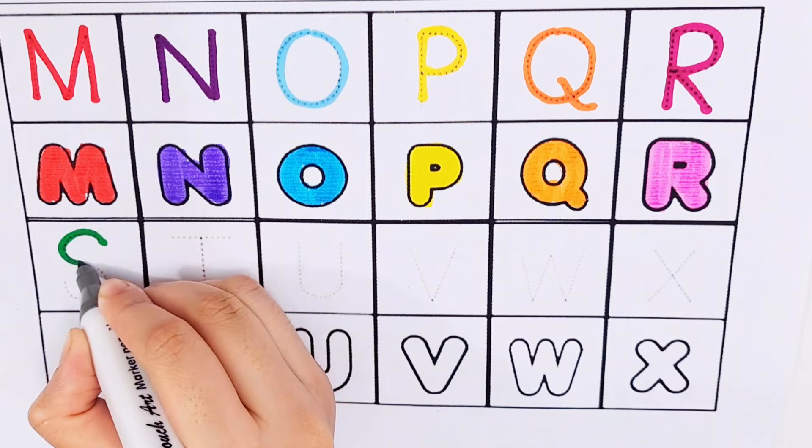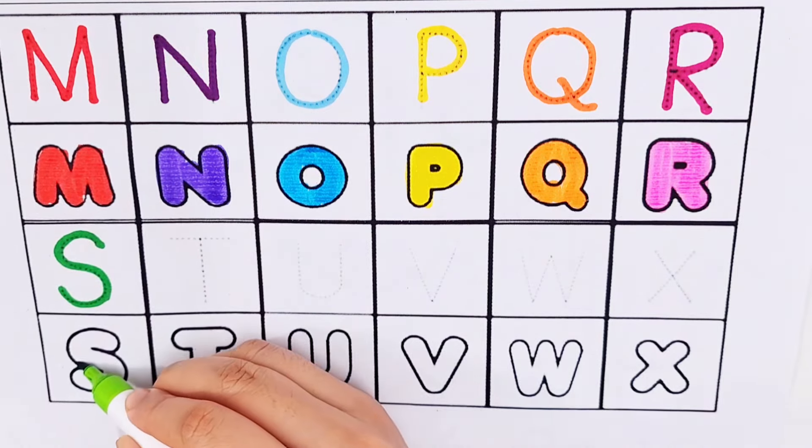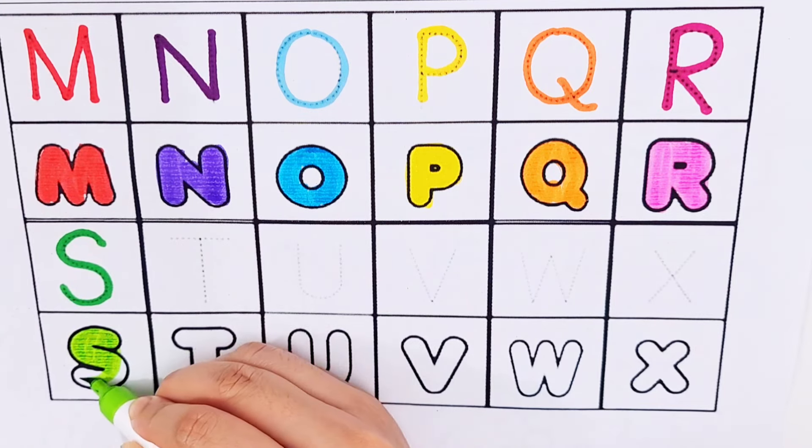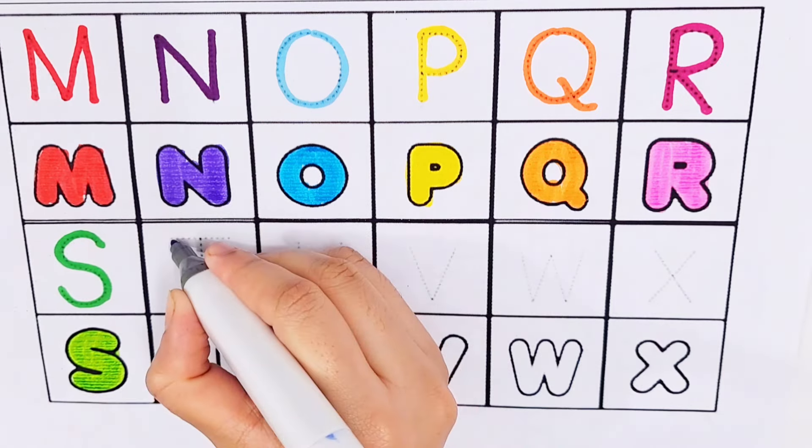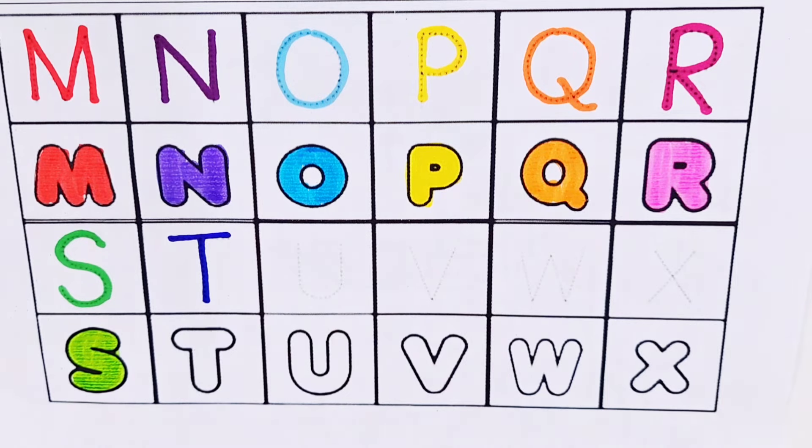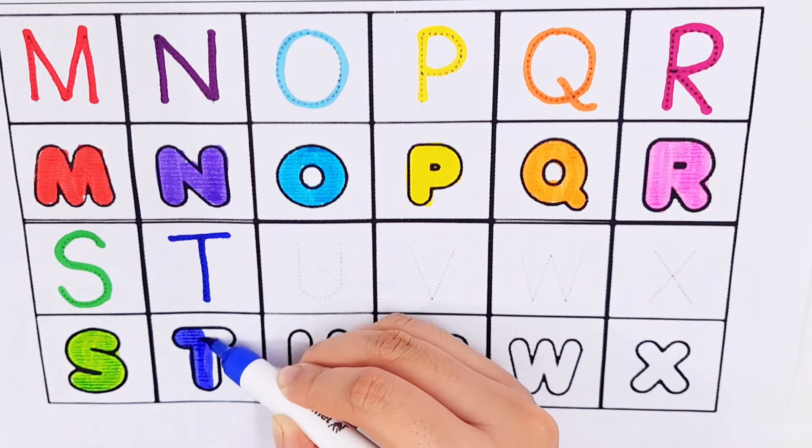S, S for sun, S for sheep. T, T for toy, T for table.